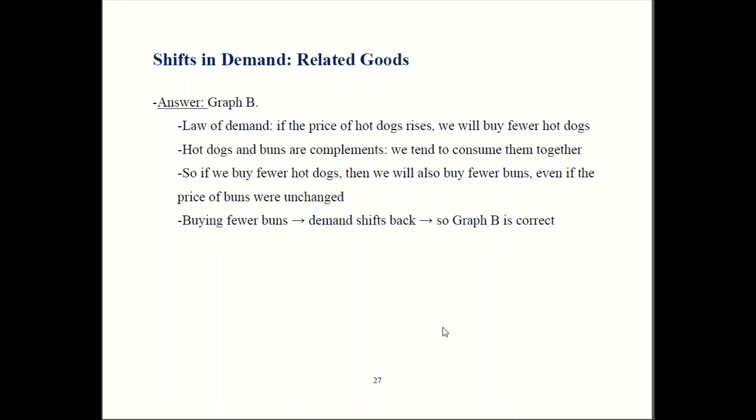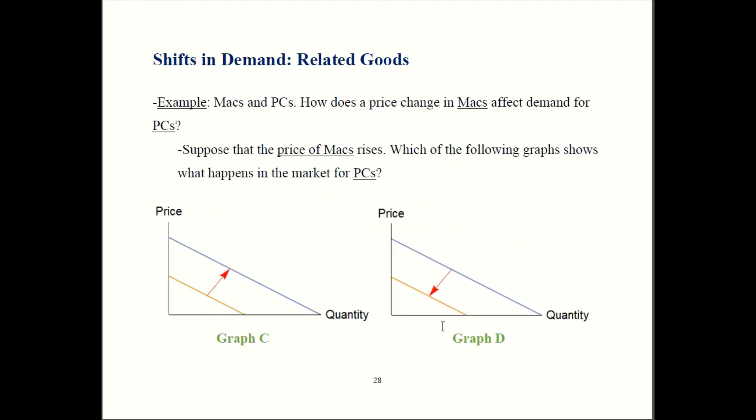Let's look at another example. We said Macs and PCs are substitutes. We'll look at how changes in the market for Macs influence PCs. Let's say Macs get more expensive. What's that going to do to PCs? Will the PC market look like graph C over here, or will it look like graph D? Give that some thought. Pause the video here, and when you're ready, press play.